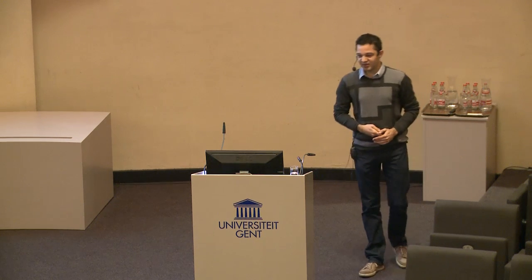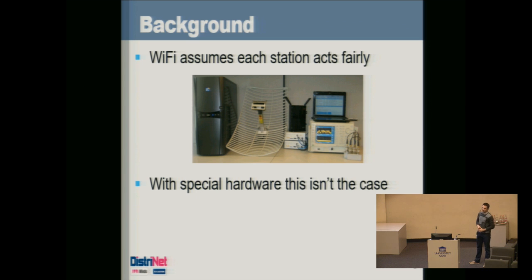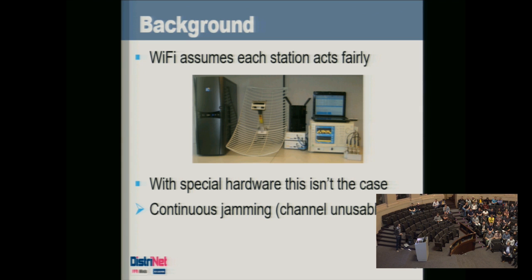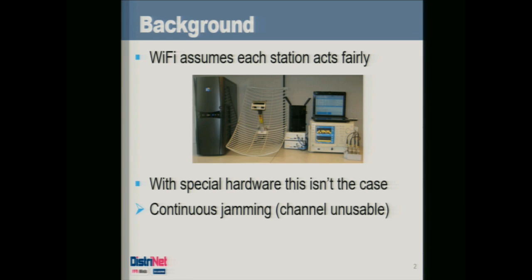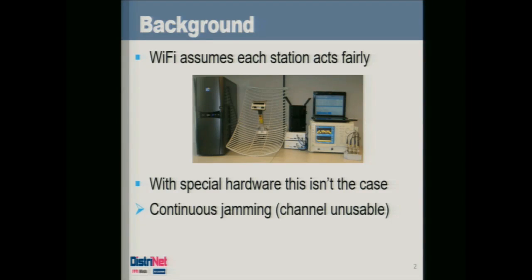It is well known that if you have expensive hardware — for example, the USRP shown here — you can implement the Wi-Fi protocol yourself and do whatever you want. With this hardware you can transmit whenever you want, without sticking to the fairness rules. You can implement a continuous jammer, which constantly emits noise and makes the channel completely unusable. One of the more advanced attacks, which is quite difficult to implement, is a so-called selective jammer.